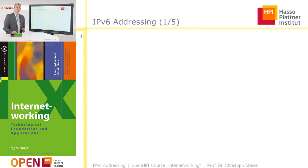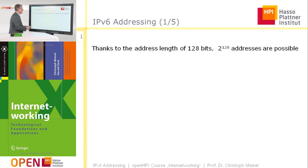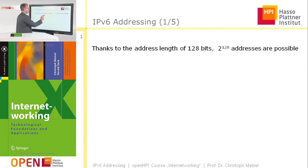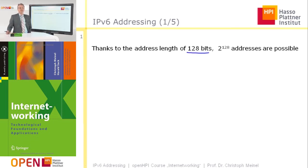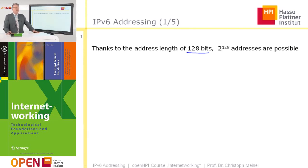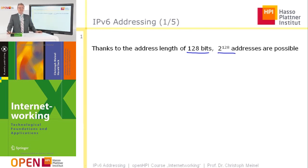Now let's have a closer look at addressing in IPv6. There is a new length of IP addresses in IPv6: 128 bits. An address of 128 bits allows 2 to the 128 different addresses, so the size of the address space in IPv6 is unimaginably huge.